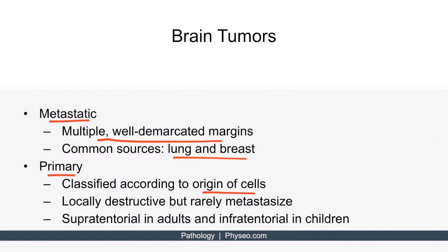One thing to note is that primary tumors are locally destructive but rarely metastasize. In terms of location, primary brain tumors are usually supratentorial in adults and infratentorial in children.